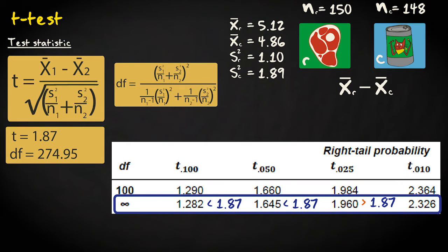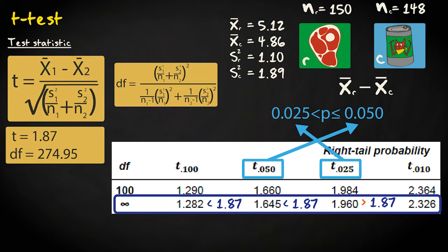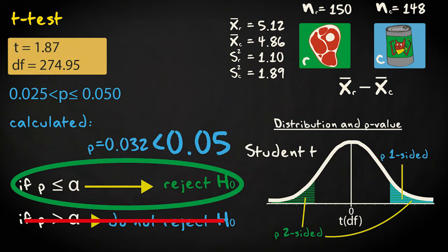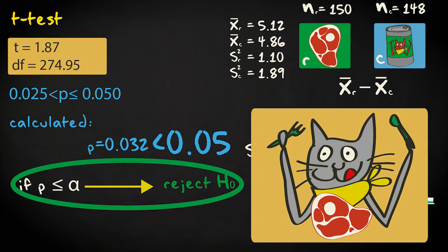If I use a table to look up the p-value, I find that it lies somewhere between 0.025 and 0.50. If I calculate the p-value with statistical software, I find a value of 0.032. This is smaller than the significance level of 0.05, so I can reject the null hypothesis. I conclude that the mean health score in the population is higher for cats on a raw meat diet as compared to cats on a canned food diet.